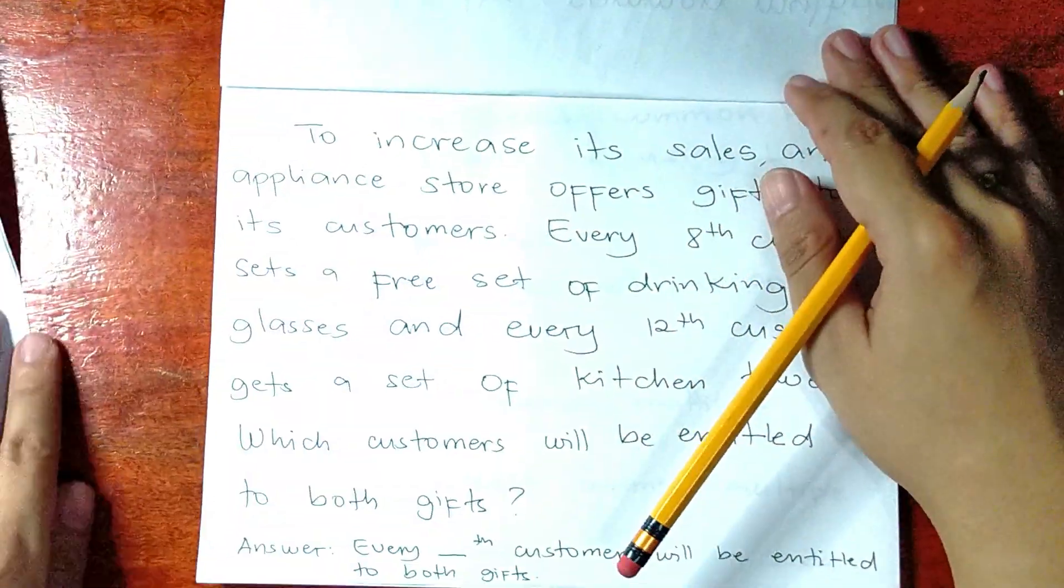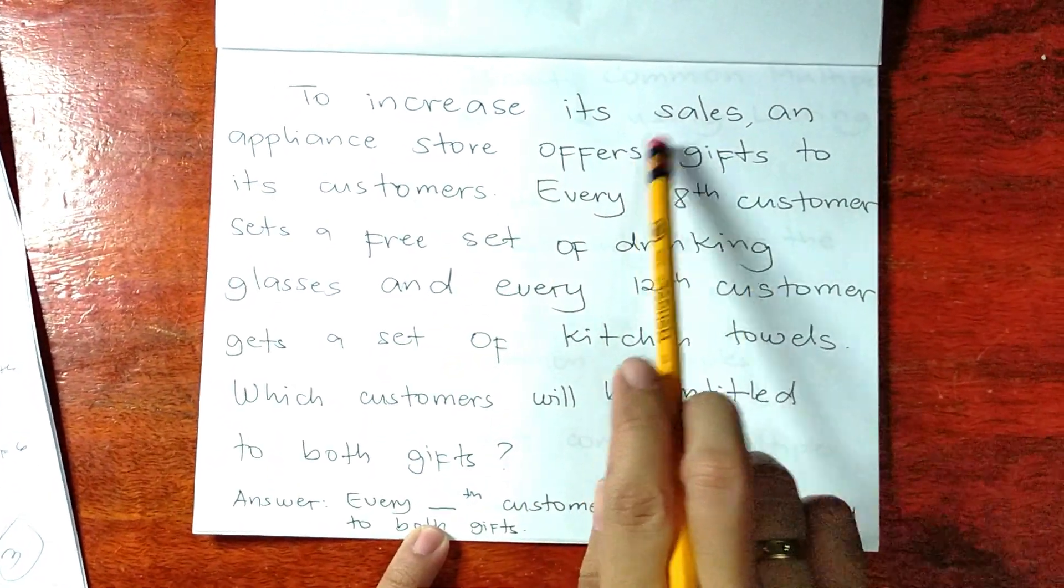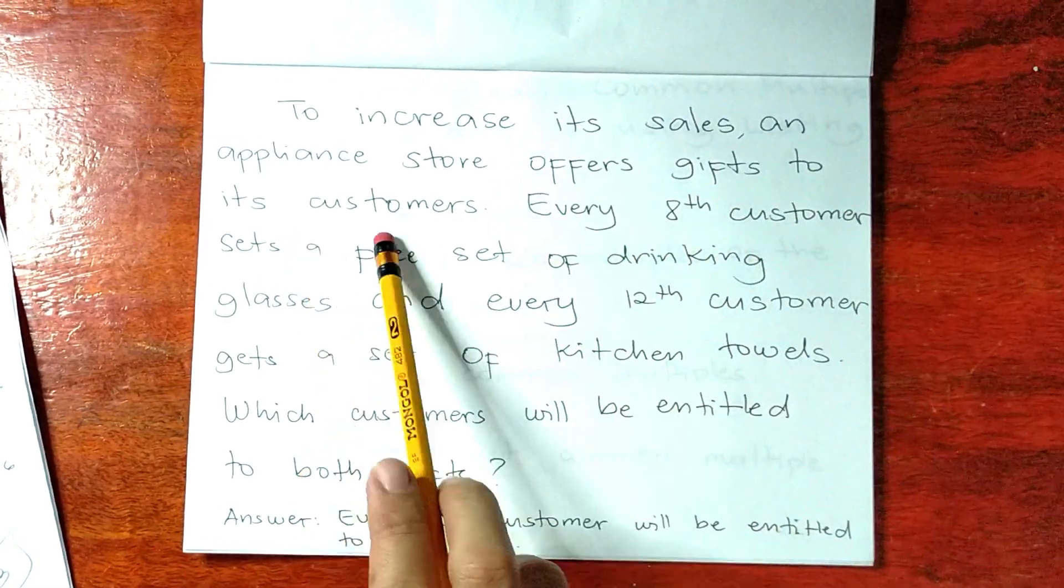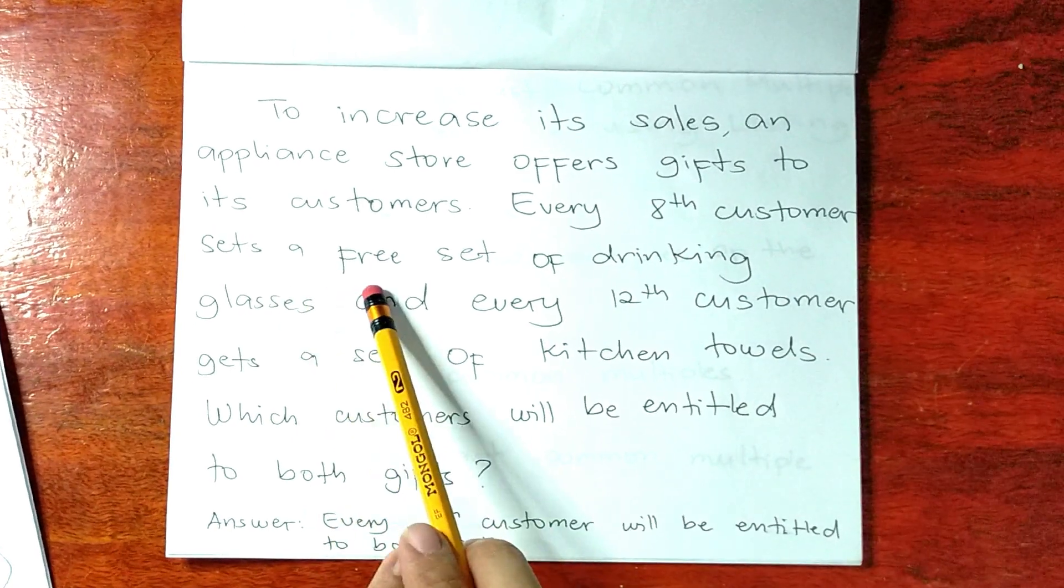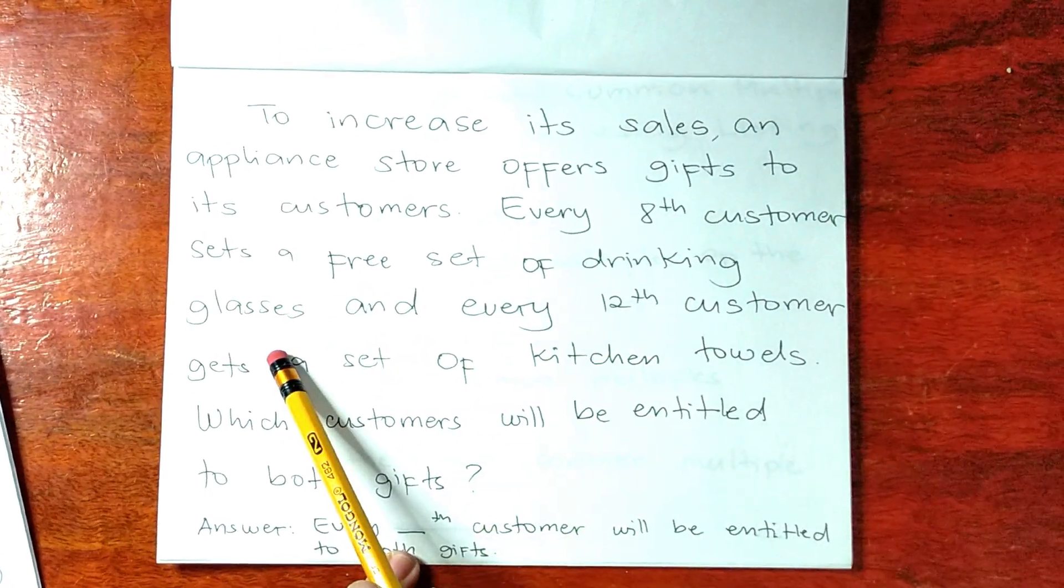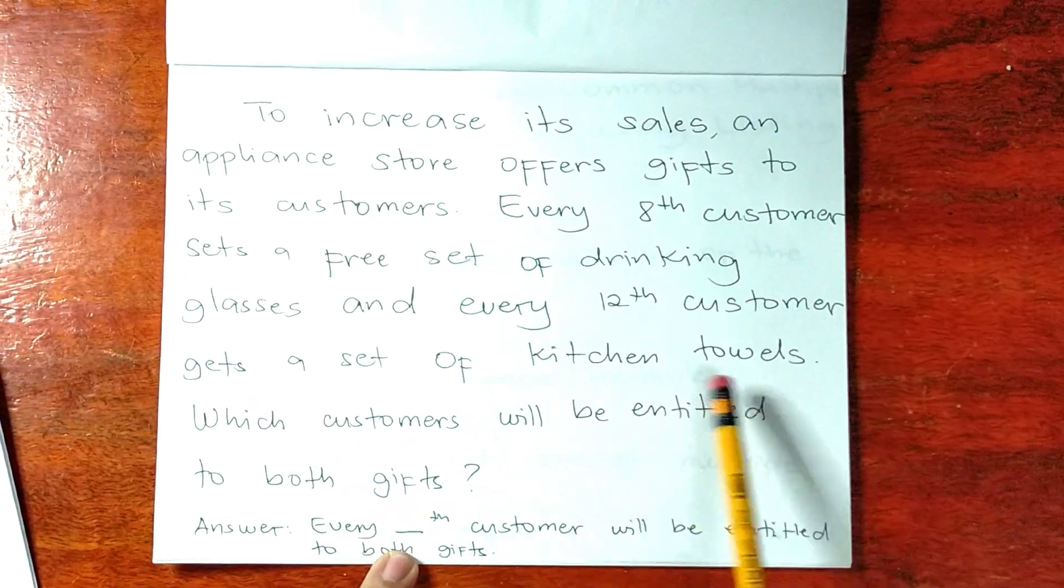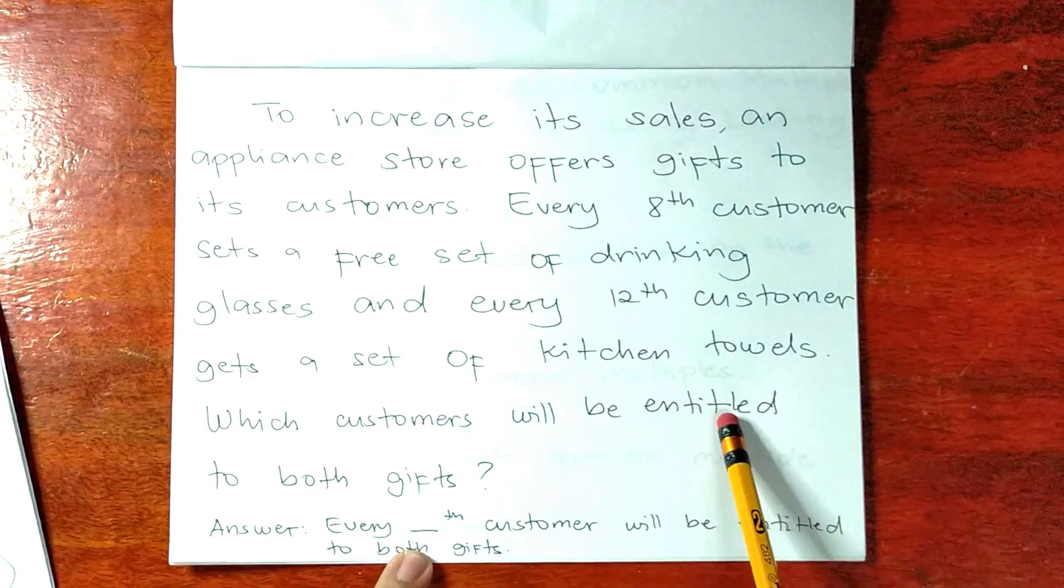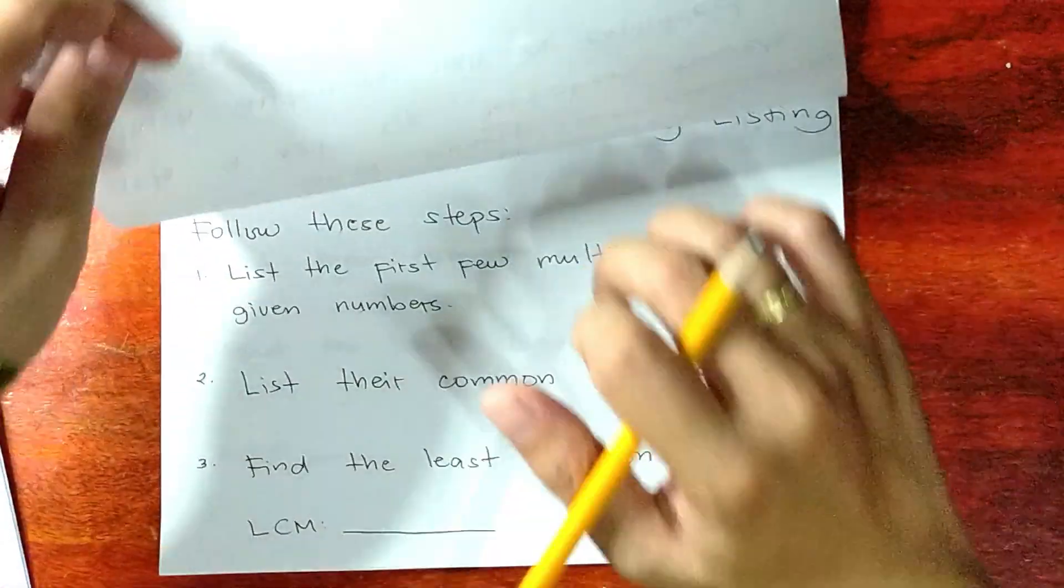Let's have an example. To increase each sales, an appliance store offers gifts to its customers. Every 8th customer gets a free set of drinking glasses and every 12th customer gets a set of kitchen towels. Which customers will be entitled to both gifts?